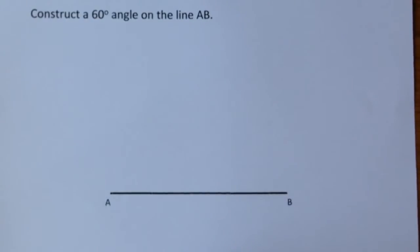I'm going to show you how to construct a 60-degree angle on the line AB. If I wanted to construct the angle at the left-hand end of the line where A is, you start with the sharp point of your compass at the left-hand end.